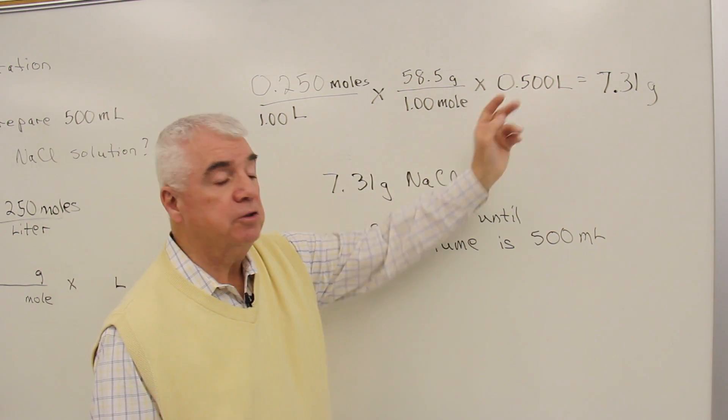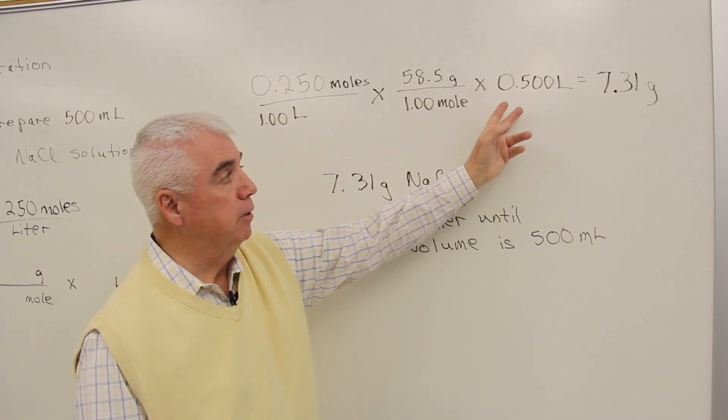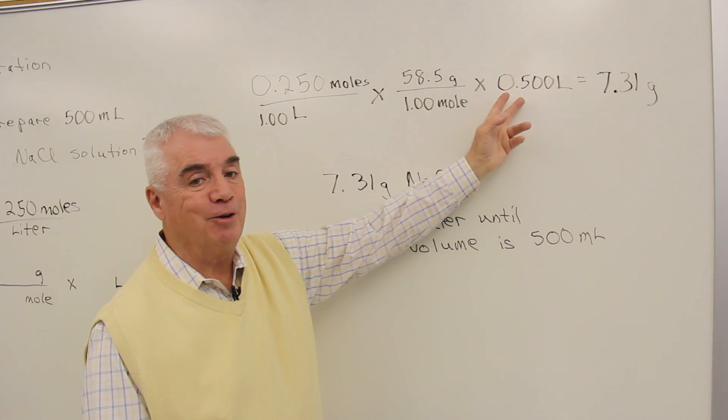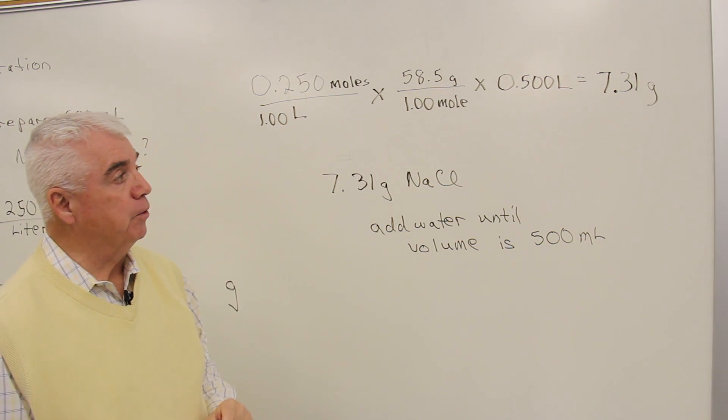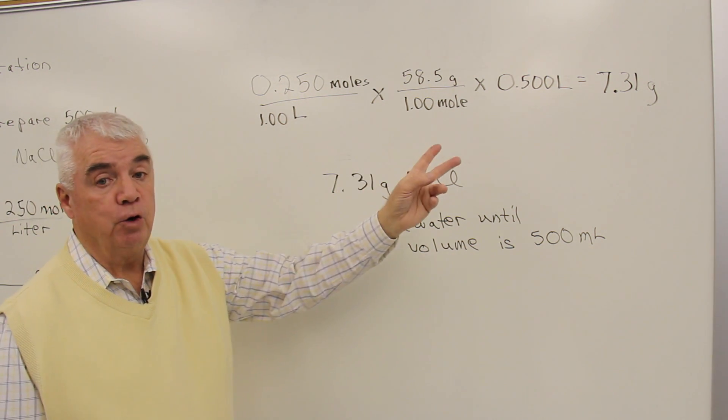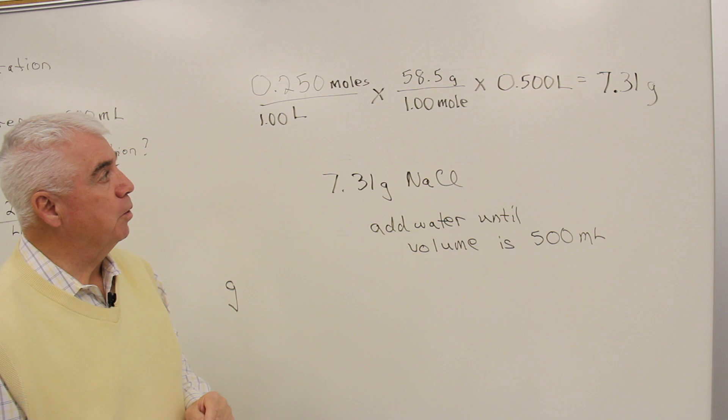The number of liters, well, I took a little shortcut. We had 500 milliliters. We know that's a half a liter. And if we multiply this out, then we get the units grams, which is what we're after.